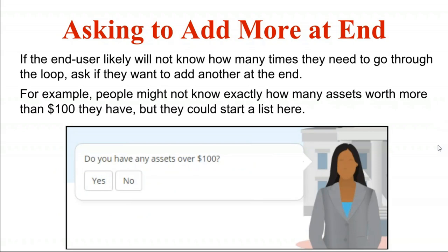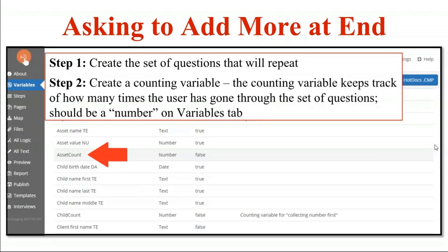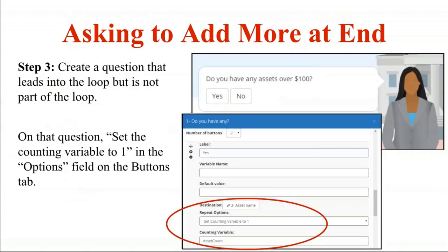The second way to create repeat loops is to ask to add more at the end. If the end user is likely not to know how many times they need to go through the loop, you ask them at the end if they want to go through again. The example I use is assets — people are not likely to know how many assets over $100 they have until they start building a list. Steps one and two are the same: create the questions and counting variable. Here my counting variable is 'asset count.' Then create a 'do you have any' question that leads into the loop but is not part of it — if they have no assets over $100, they're branched out.